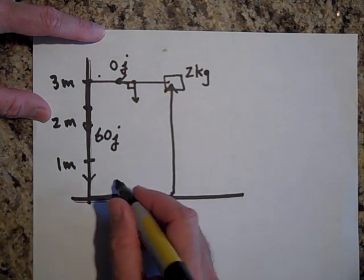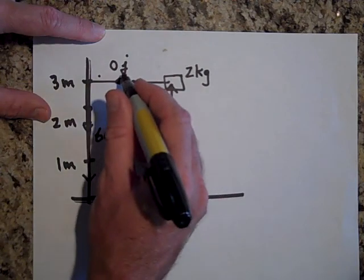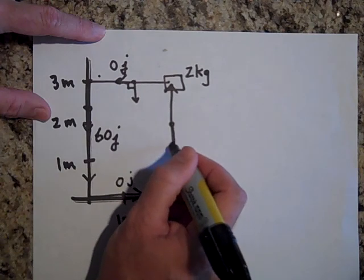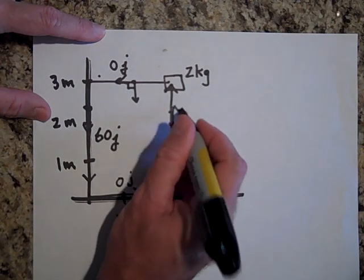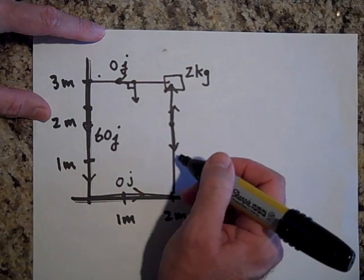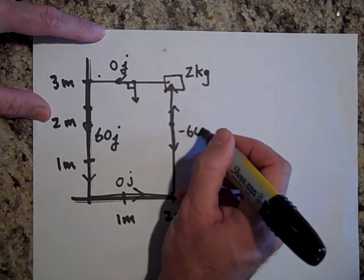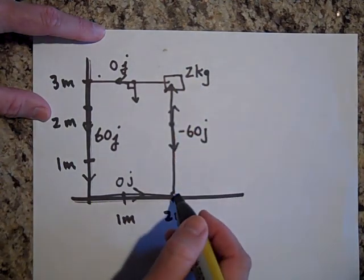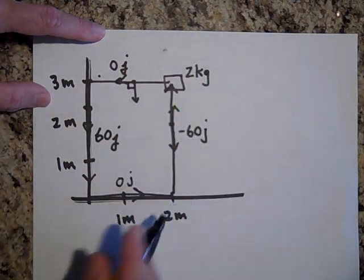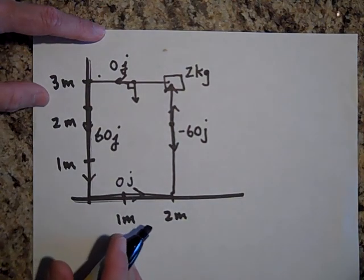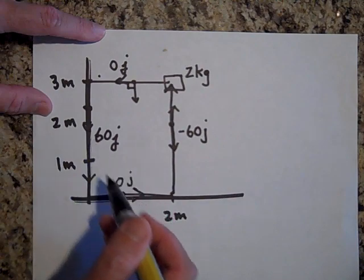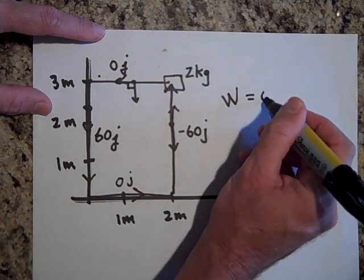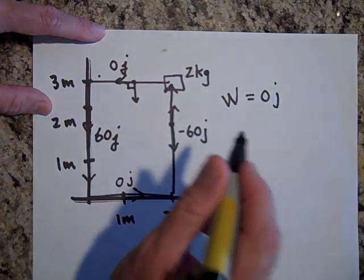The next horizontal segment again gives zero joules for the same reason. Then moving back up three meters: gravity is downward but displacement is upward, so that's 20 N × 3 m × cos(180°) = −60 joules. Adding it all up: 0 + 60 + 0 + (−60) = zero joules total. This confirms gravity is a conservative force.